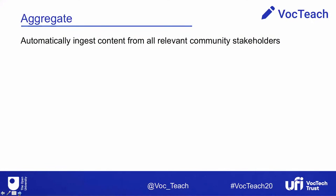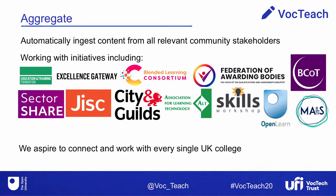The first pillar is to aggregate — and by aggregating, we really mean automatically ingesting content from many relevant community stakeholders. This requires putting together the right technical infrastructure supported by new protocols for data exchange across systems. We have already started working with a number of organizations in this space and are heavily immersed in actually gathering content with the help of these partners together on our pilot application, which we will show you in a minute.